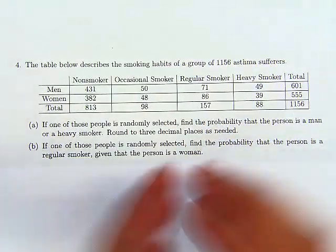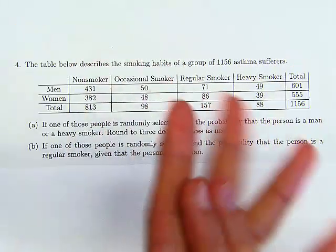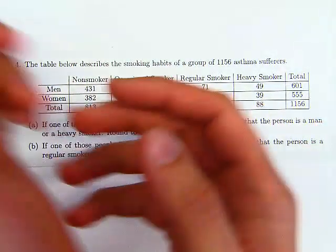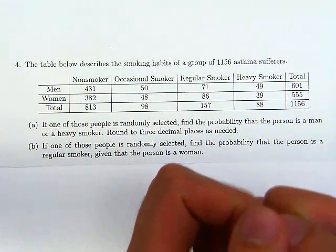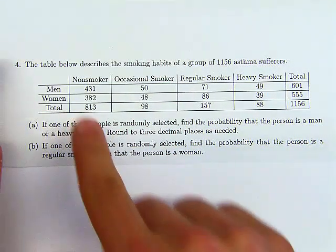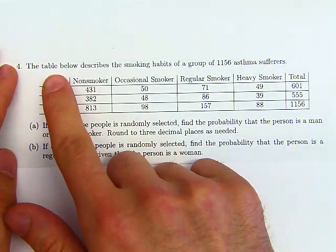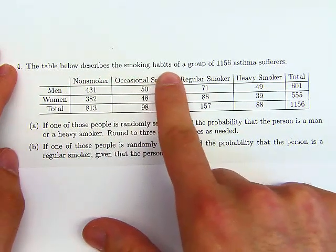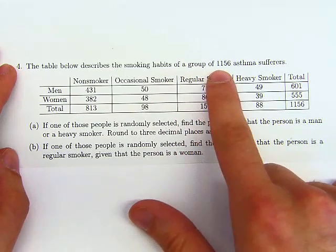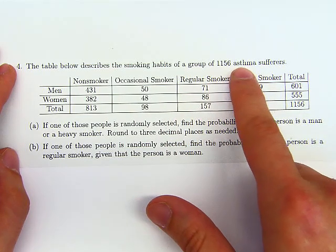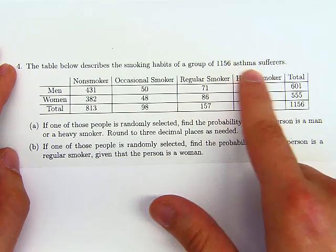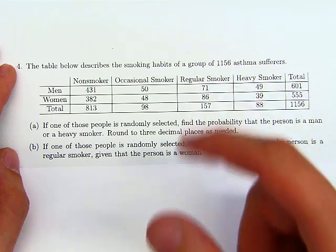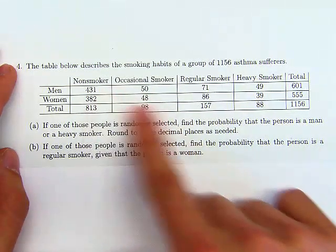Welcome back everybody. Let's go over question four for the statistics sample final exam. The table below describes the smoking habits of a group of 1,156 asthma sufferers.